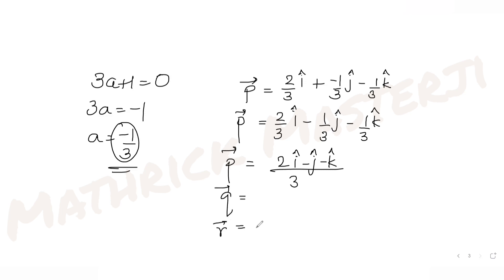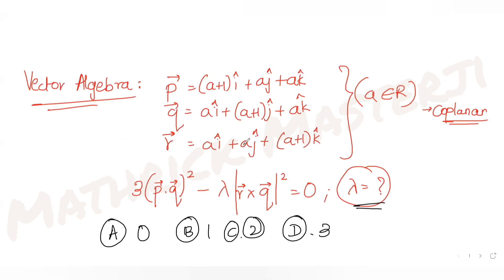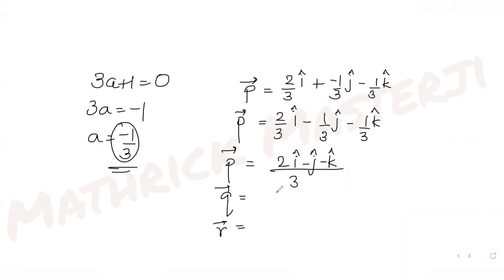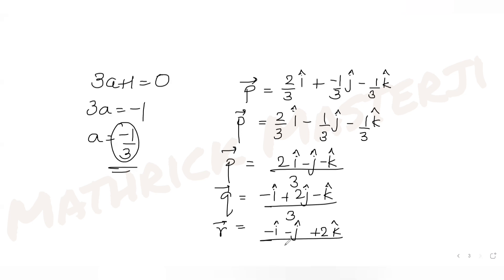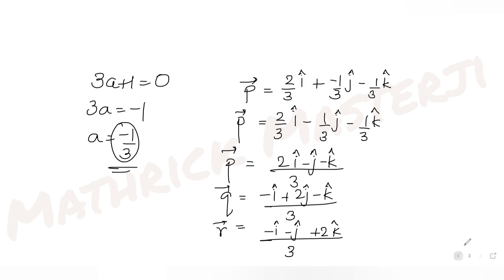For vector q, (a+1) is with j, giving q = (−i + 2j − k)/3. For vector r, (a+1) is with k, giving r = (−i − j + 2k)/3. Now we have all three vectors p, q, and r explicitly.